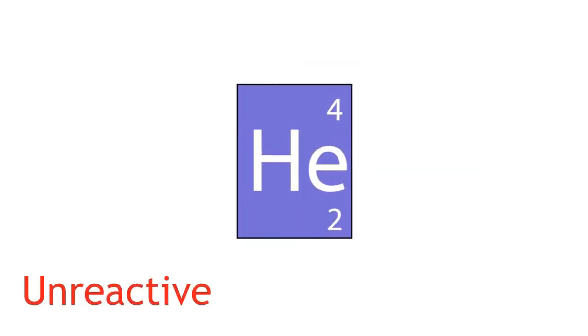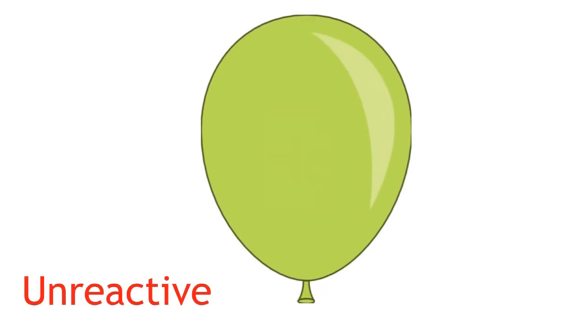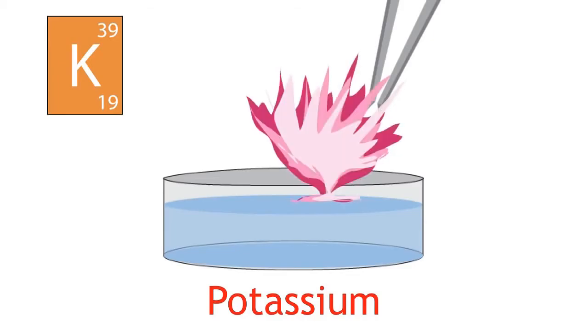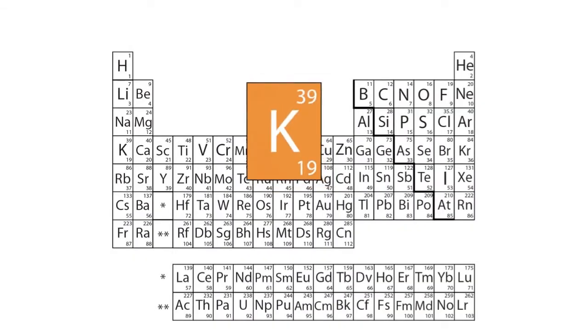For example, some gases are completely unreactive with everything, while some metals have vigorous reactions with water. Properties like these allowed elements to be grouped together.